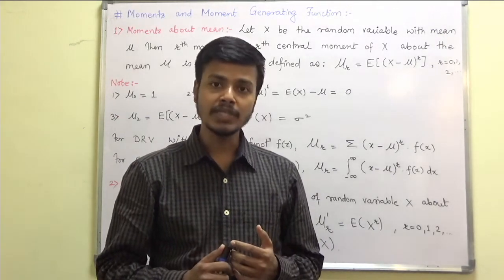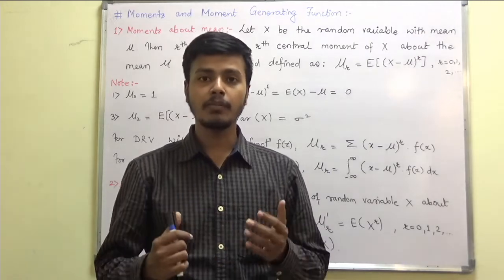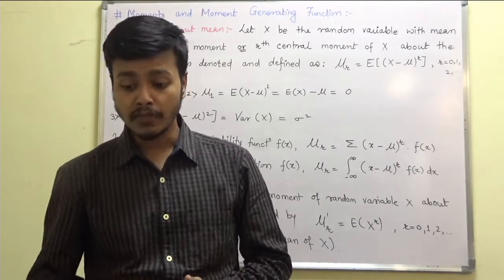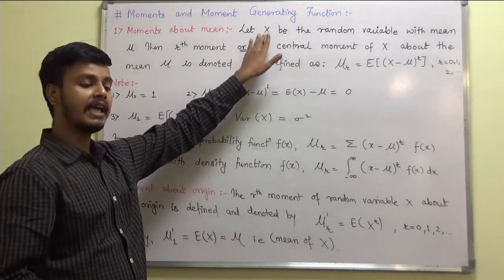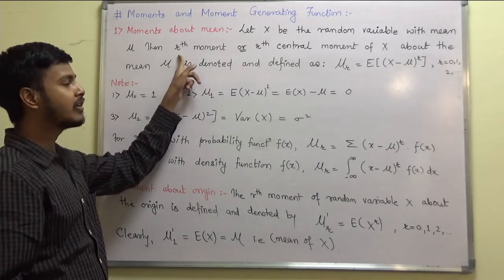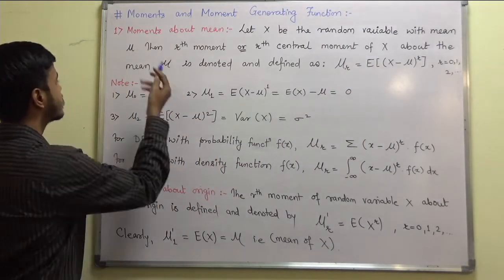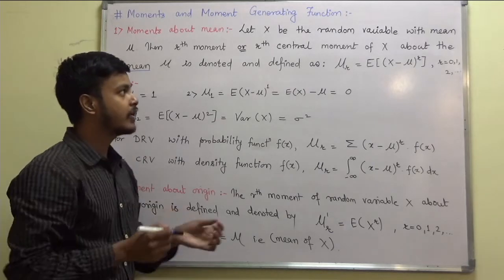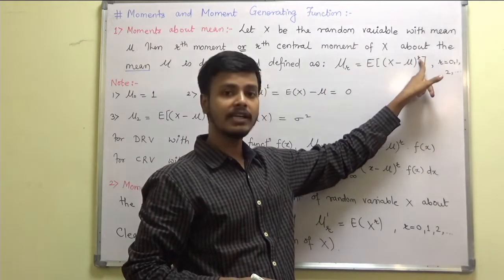In this topic there are two types of moments: one is moment about the mean, and the second is moment about the origin. Let us first talk about moments about the mean, which is also known as the measure of deviation of the value from its mean. For a random variable x with mean mu, the rth moment — also called the rth central moment of x about the mean — is given by mu_r equals expectation of (x minus mu) to the power r.